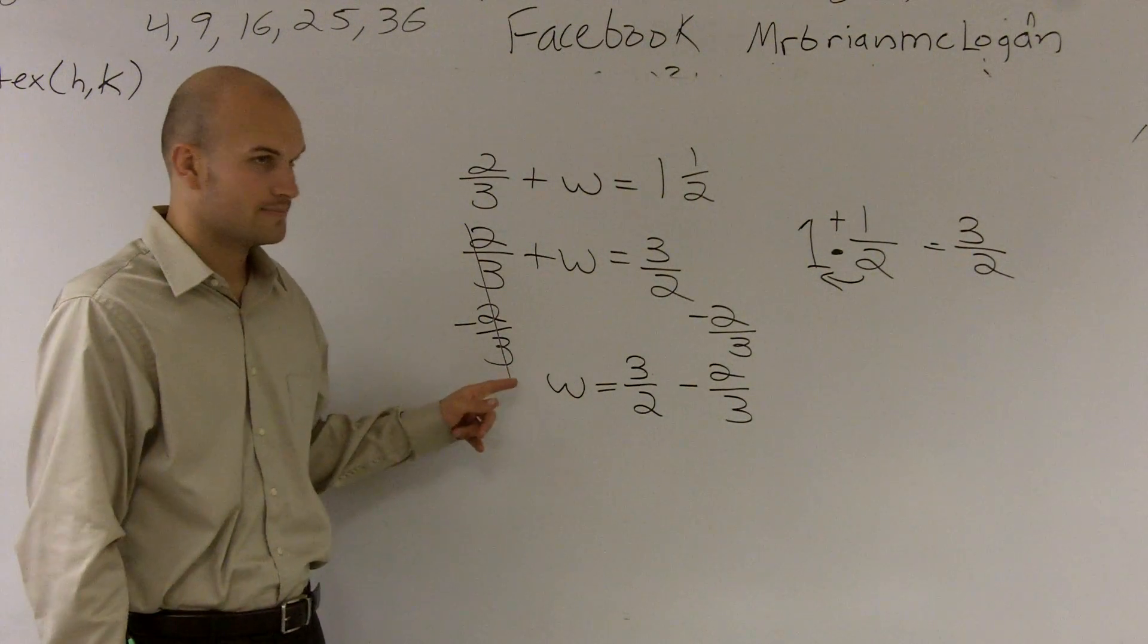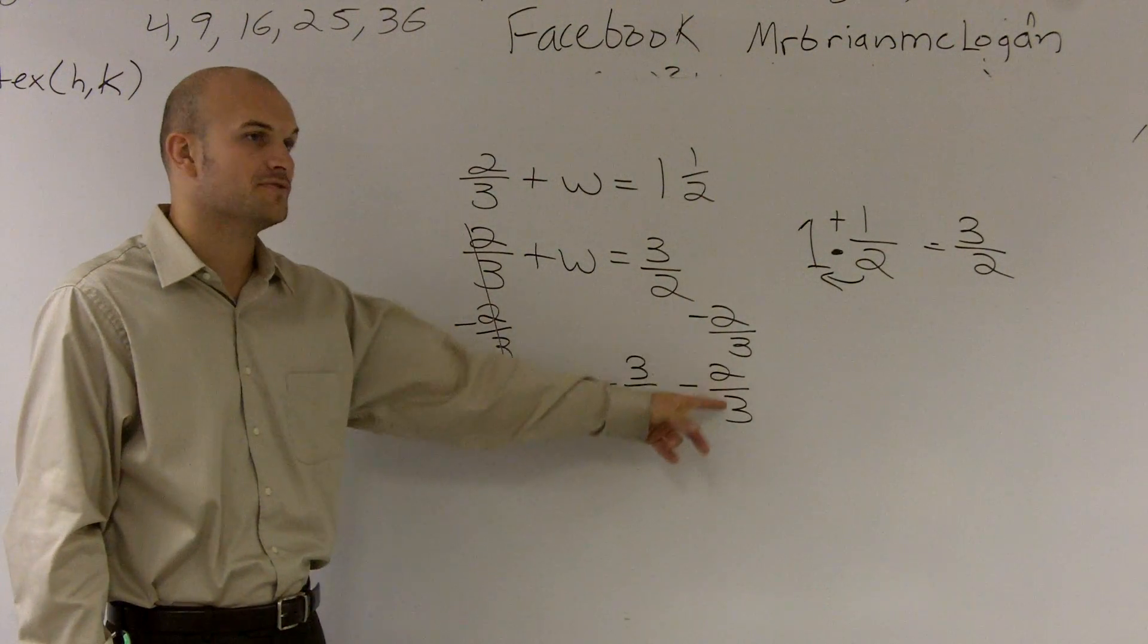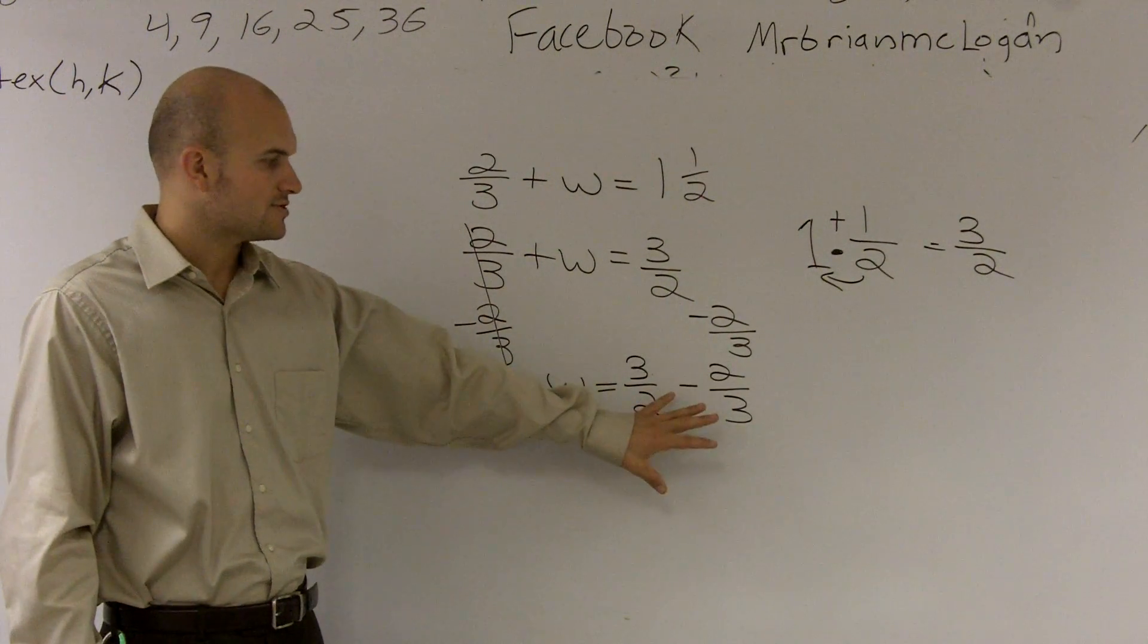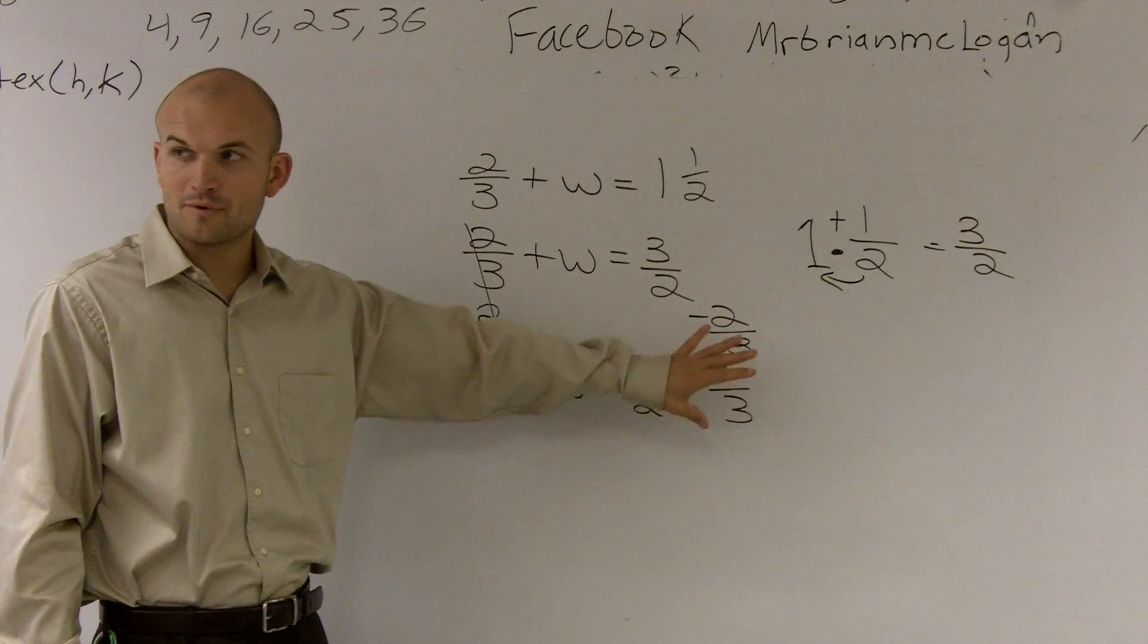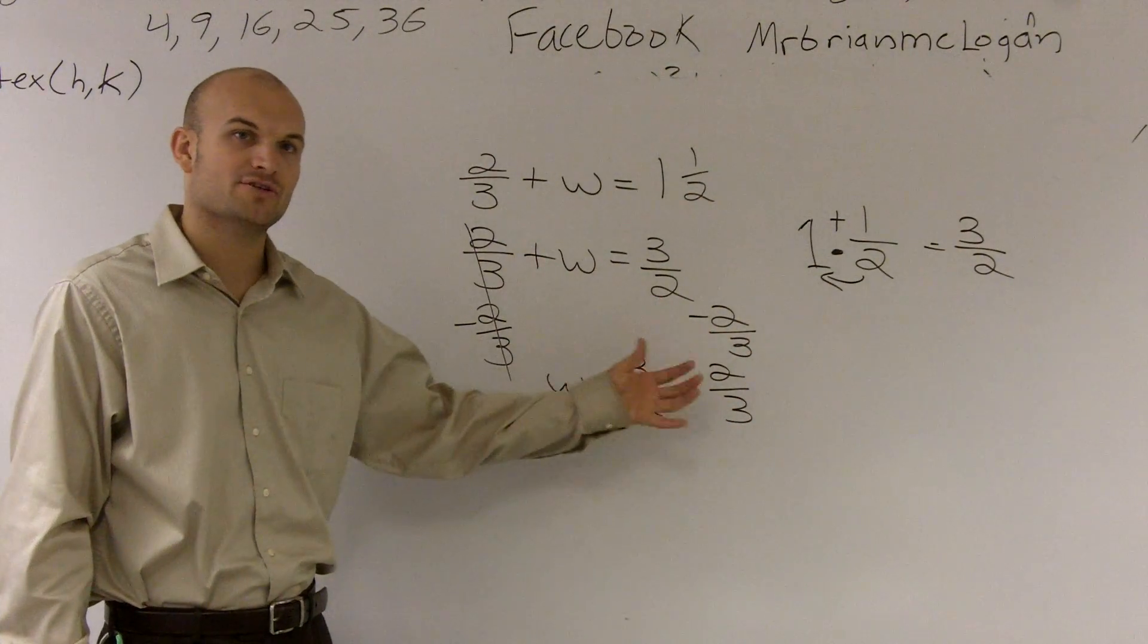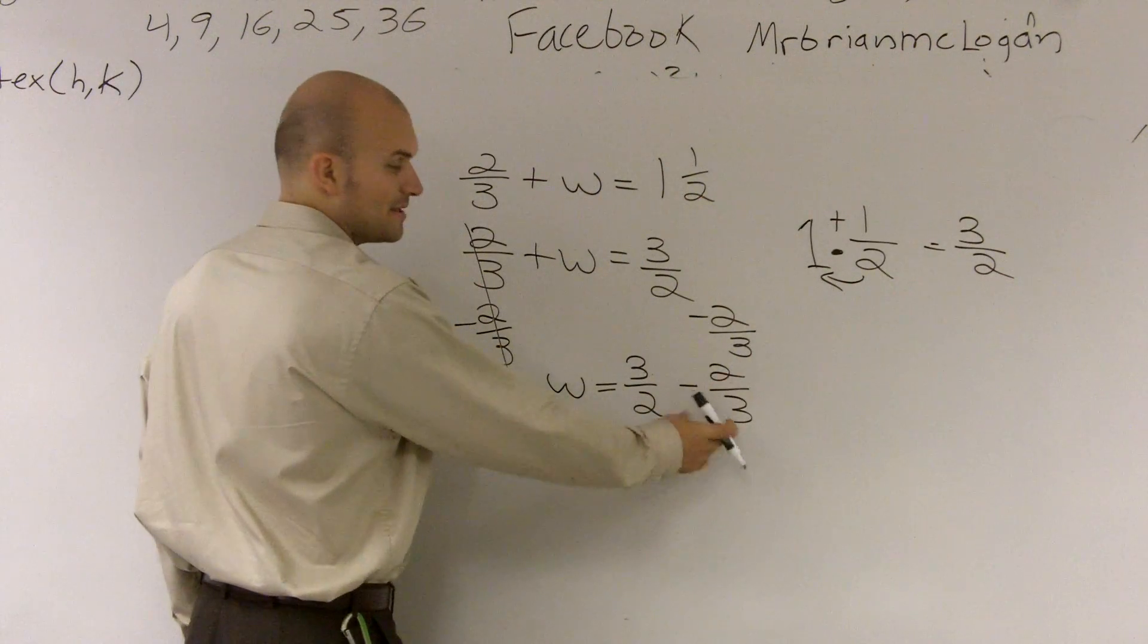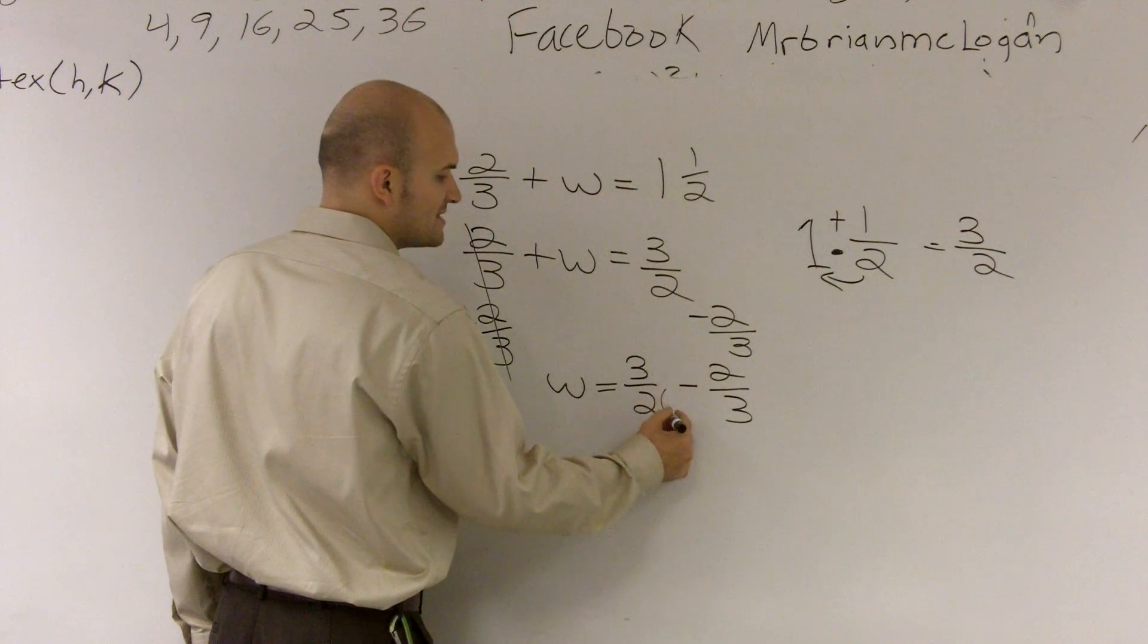This becomes zero. But now we have 3 halves minus 2 thirds. Okay? So what we have to do is remember whenever we're adding or subtracting, we have to make sure they have common denominators. So if I look, what's the common denominator between 2 and 3? It's going to be 6.